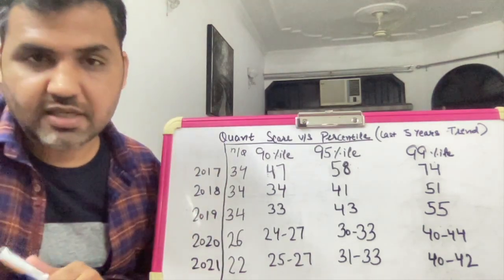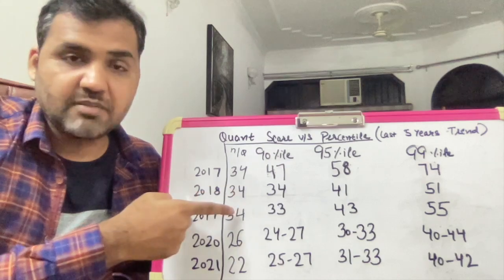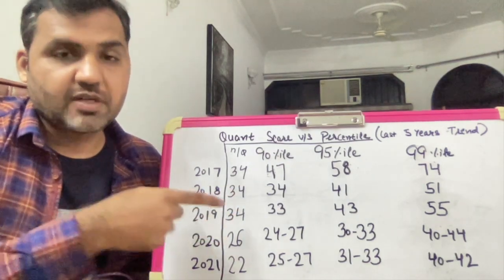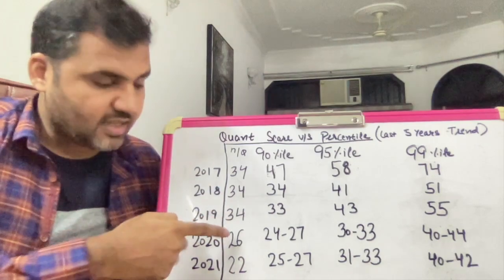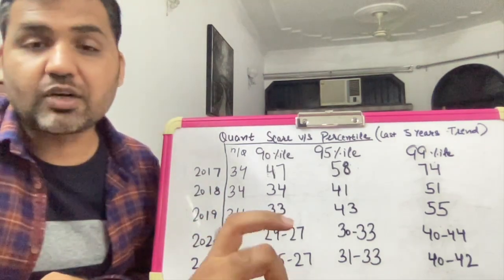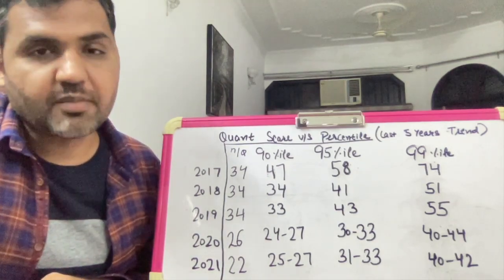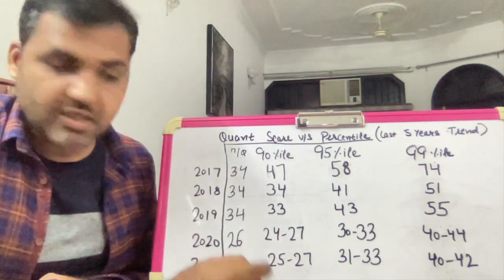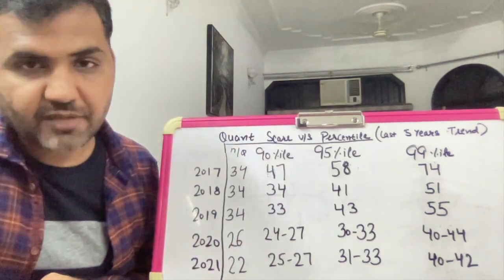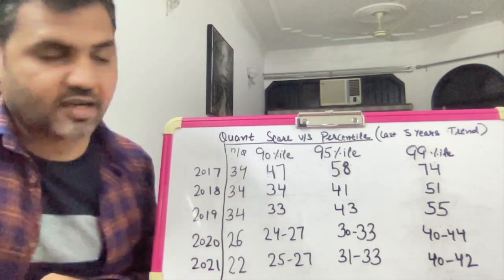Let's talk about five years: 2017, 2018, 2019, 2020, and 2021. In 2017, the number of questions were 34; in 2018, 34 questions; in 2019, 34 questions. In 2020, the COVID period started and the number of questions were reduced to 26. In 2021, there were 22 questions. The total timing of the paper was also reduced by 20 minutes — sections went from 60 minutes down to 40 minutes.